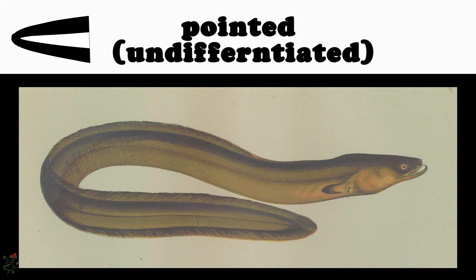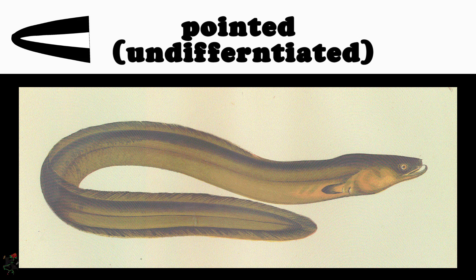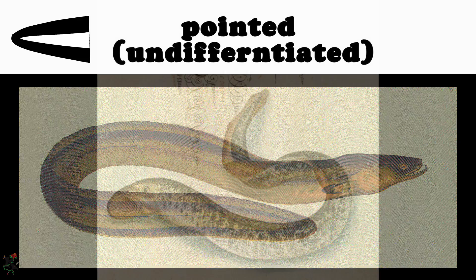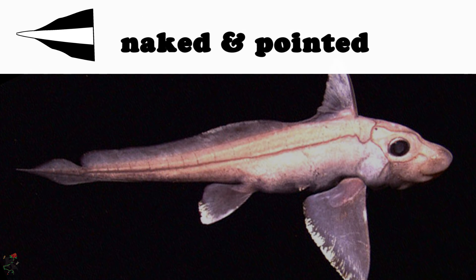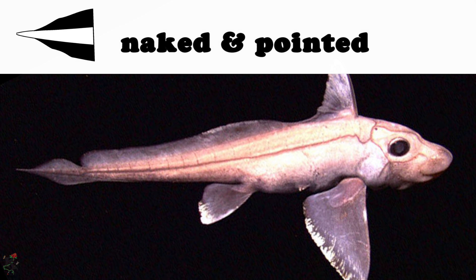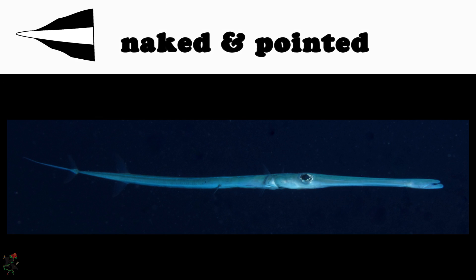This broad-nosed eel has a pointed and undifferentiated tail. So does this sea lamprey. A naked and pointed tail, or one without rays on the end, is seen on this species of chimera and on a cornet fish.